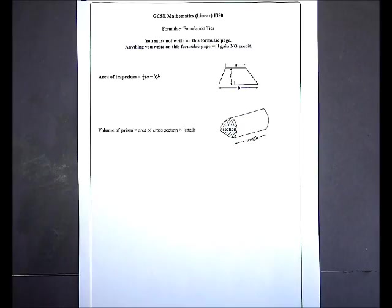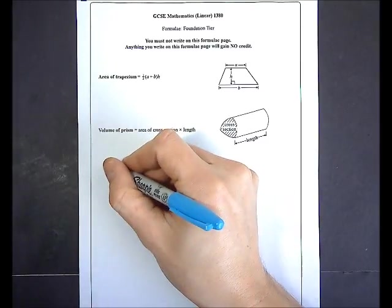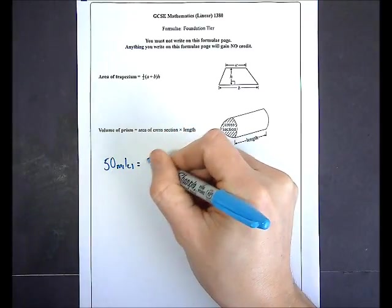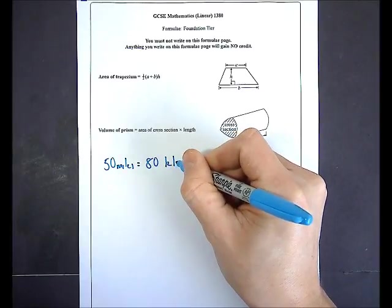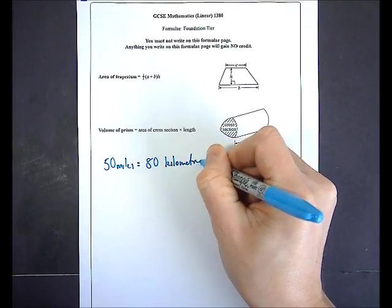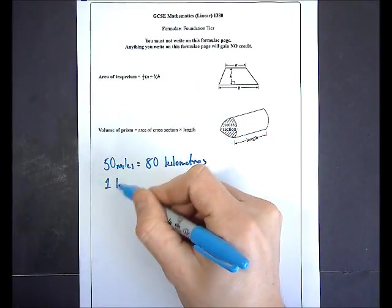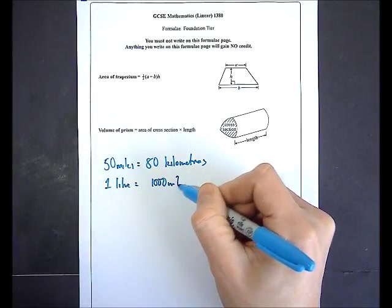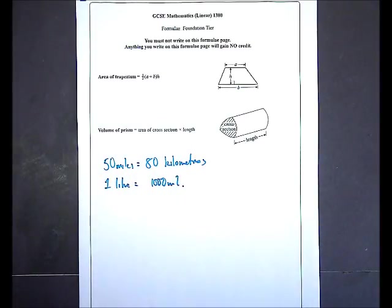As previously, take the opportunity at the start of the exam to write down any formula on the formula page you think you might need to remember during the course of the exam. You may feel that you need to remember that 50 miles is 80 kilometres, or something as simple as that 1 litre is 1000 millilitres — anything you think you're liable to forget.